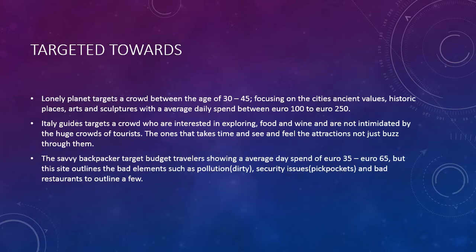The different types of websites target different people. Lonely Planet targets people between the age of 30 to 45, focusing on the city's ancient values, history, art and sculpture. The official Italy website targets crowds who are interested in exploring the city, food, wine and architecture. The Savvy Backpacker shows average spend and outlines the negative elements such as pollution and security issues in the city.